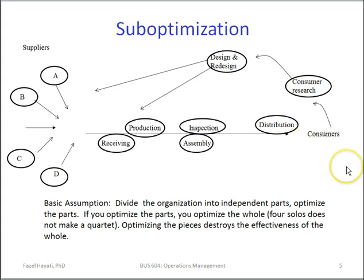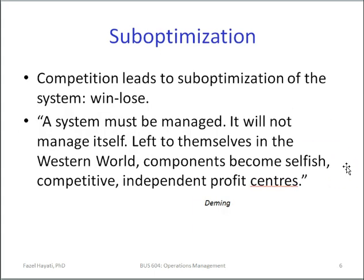The purpose is aimed at the consumers. That would lead to sub-optimization. One of the structures in an organization that promotes sub-optimization is how we create competition among the parts. Competition leads to sub-optimization of the system and creates a win-lose relationship. Therefore, a system must be managed — it will not manage itself. Left to themselves, as Dr. Deming says, components become selfish, competitive, independent profit centers.